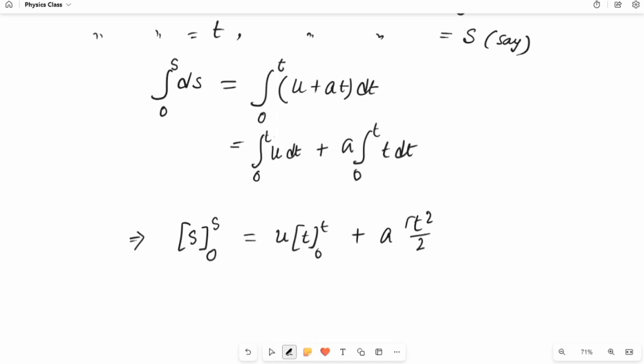Now in the next step it will be s minus 0, upper limit minus lower limit, and u times t minus 0 plus a t squared by 2 minus 0.